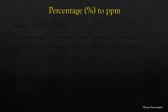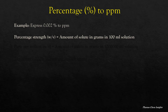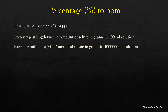Let us see how to convert percentage to PPM with an example. Express 0.002 percentage to PPM. First, understand what is percentage and what is PPM. Weight by volume percentage is equal to the amount of solute in grams in 100 ml solution. Parts per million weight by volume is equal to the amount of solute in grams in 1 million ml solution.